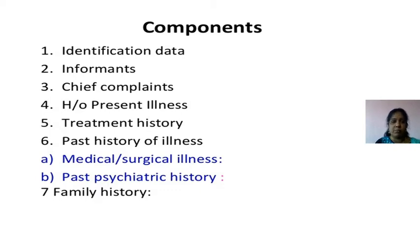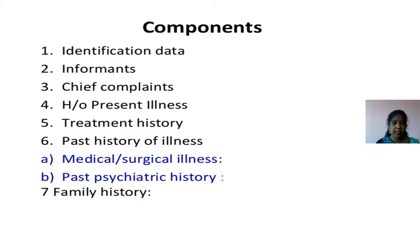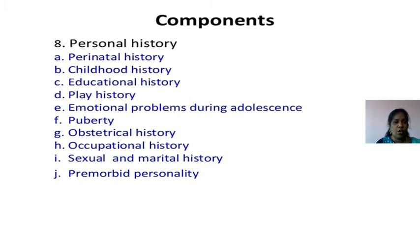Now we will see the components of history taking. First, we have to see the identification data, then informants — whether they are reliable or not. The patient or the patient's attendant will be the informant. Next, we go for chief complaints, history of present illness, treatment history, past history of illness — medical and surgical — past psychiatric history, family history, and personal history.